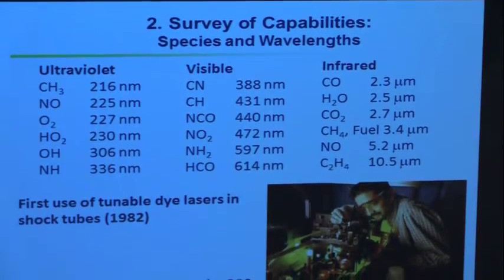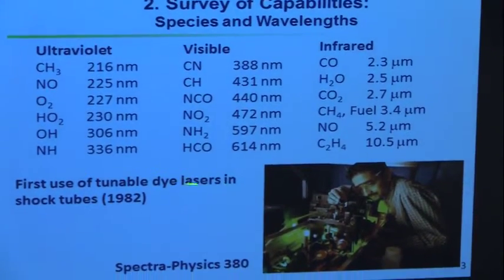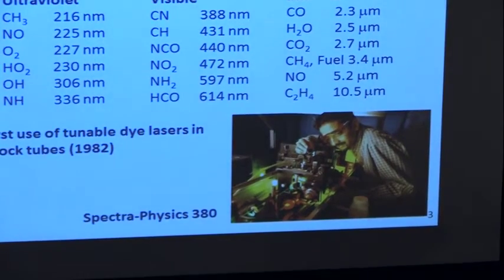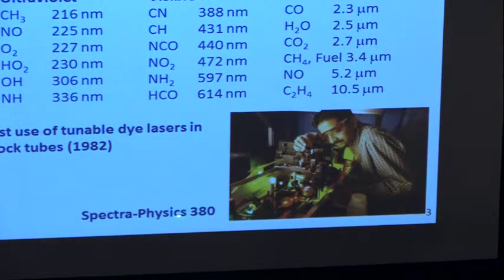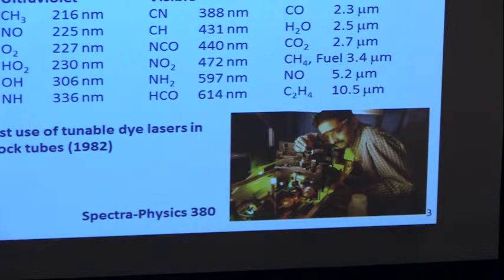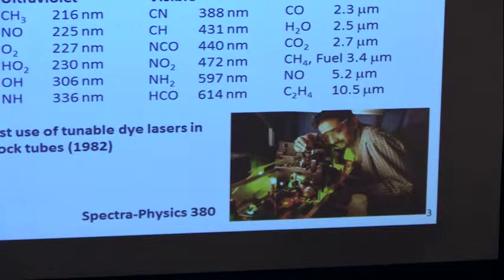The first time we did this was with a tunable dye laser in 1982 — 33 years ago — and we're still using that laser. This is a ring dye laser: a pump laser excites the dye, the radiation propagates in the cavity, and we control the wavelength. It's a typical tunable, single-frequency, monochromatic CW dye laser. We might use that in the ultraviolet.